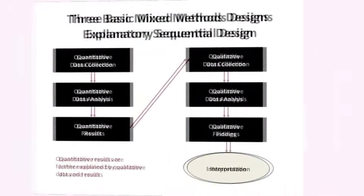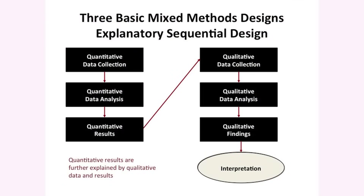The next is an explanatory sequential design — a very popular one in the social sciences and health sciences. We start by collecting quantitative data, analyzing it, and then from those results we build in a second qualitative phase where we follow up. The whole idea in this design is to interpret the quantitative results using the qualitative data.